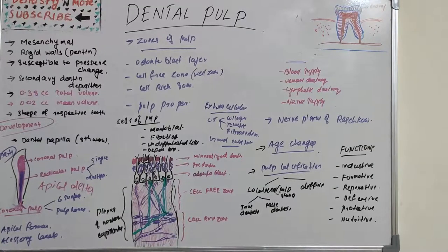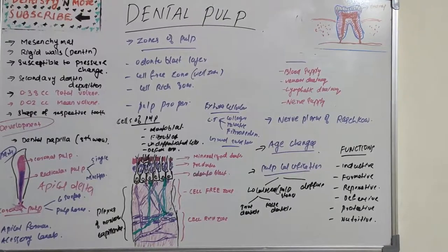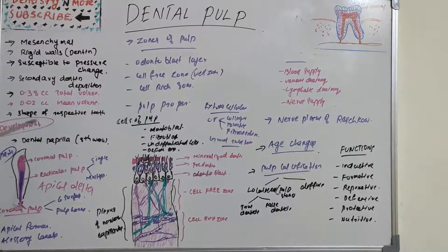Accessory canals run from the lateral side of the radicular pulp into the periodontal tissues — not just at the root tip. They are numerous in the apical third and are formed due to the premature loss of Hertwig's epithelial root sheath. This is the condensation of outer and inner enamel epithelium that helps in root formation; when it fragments it becomes the epithelial rests of Malassez.